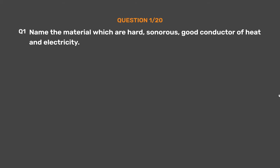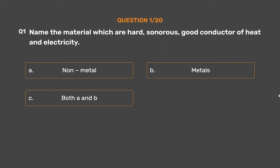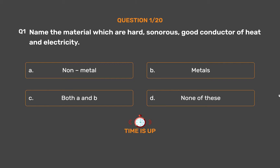Question number 1. Name the material which is hard, sonorous, and a good conductor of heat and electricity. Option A: Non-metal. Option B: Metals. Option C: Both A and B. Option D: None of these. The correct answer is Option B: Metals.